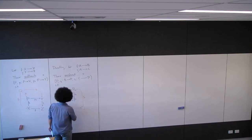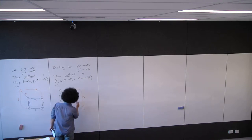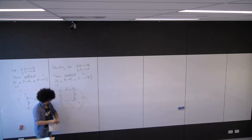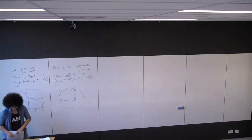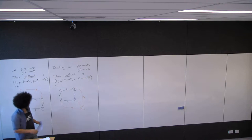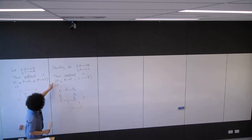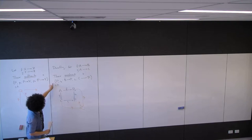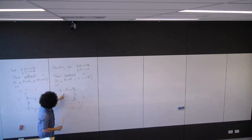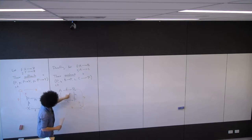Then you want a unique map here such that these triangles commute. So the pushout is these three pieces of information and the fact that this square commutes.